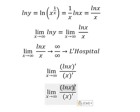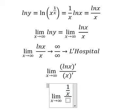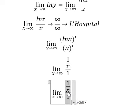So this one gives us 1 over x. This one gives us 1, and this becomes 1 over x.